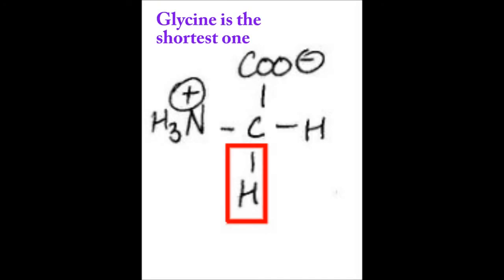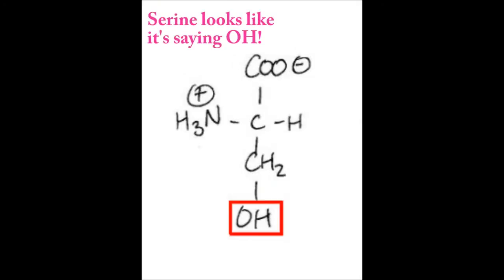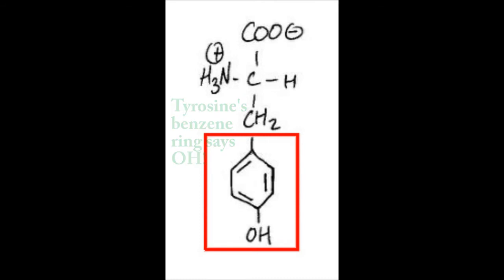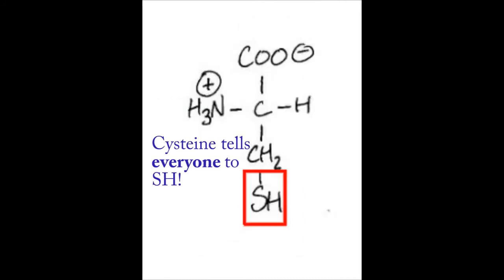Glycine is the shortest one. Serine looks like a serine. Threonine has flicidin cells. Tyrosine's benzene ring sells. Cysteine tells everyone too.